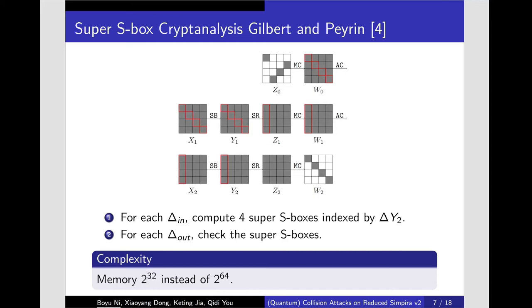Since the operation MC is linear, we compute the corresponding difference at state X_1. For each of the 2^32 differences at state W_2, we compute the corresponding difference at state Y_2 and store them in a list L.